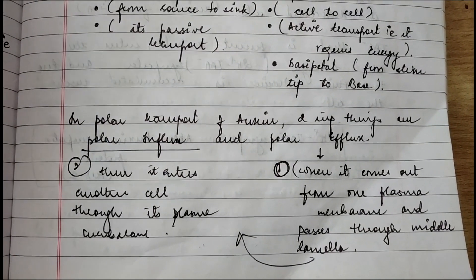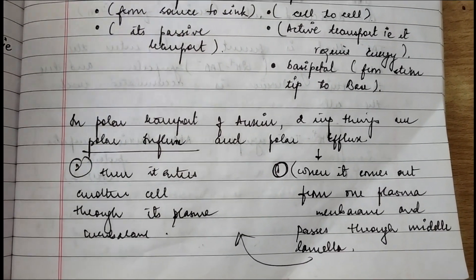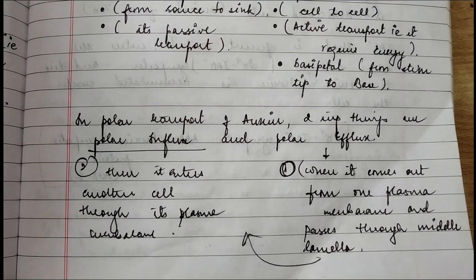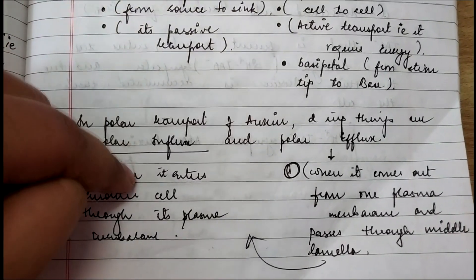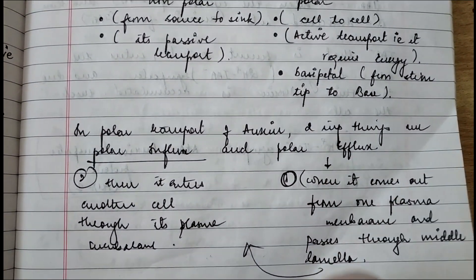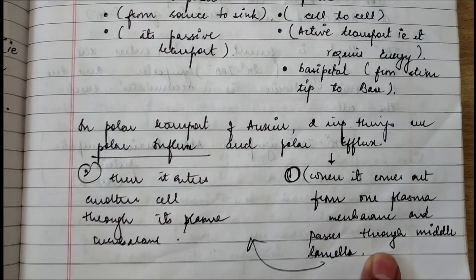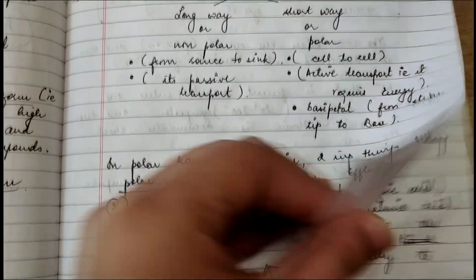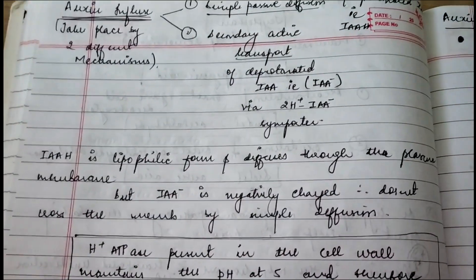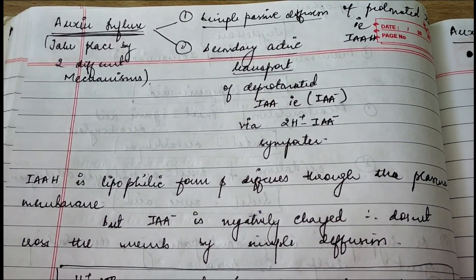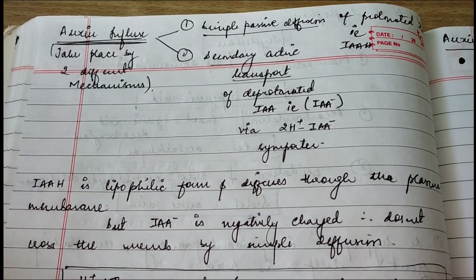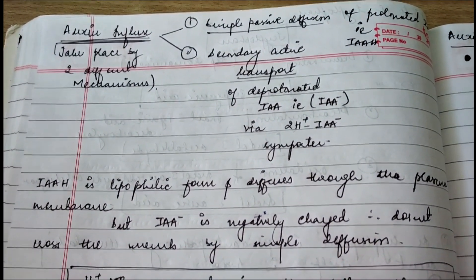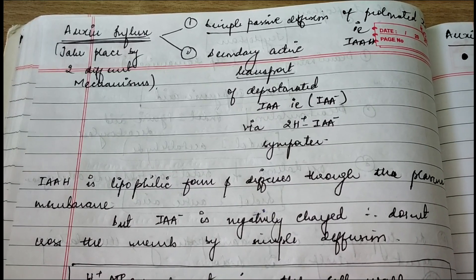In polar transport of auxin, two important things are polar influx and polar efflux. Efflux means when auxin comes out of the plasma membrane and passes through the middle lamella, and then enters another cell through its plasma membrane — this entry step is referred to as polar influx. Auxin influx means auxin entering inside the plasma membrane. Influx takes place by two different mechanisms: simple passive diffusion and secondary active transport.